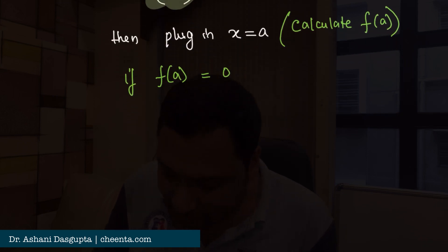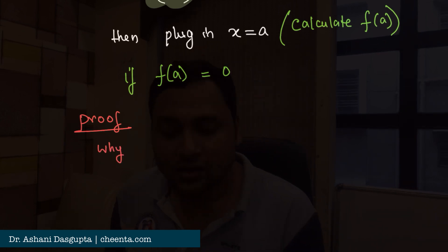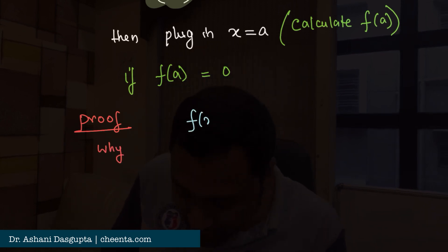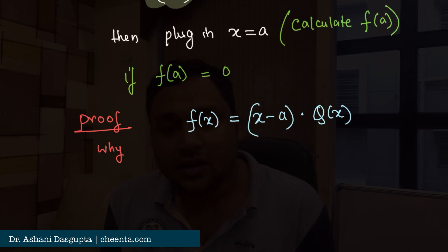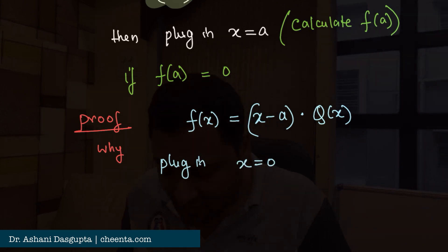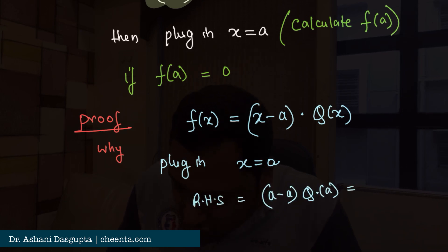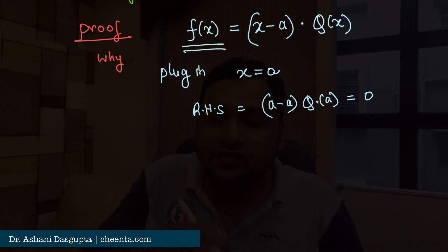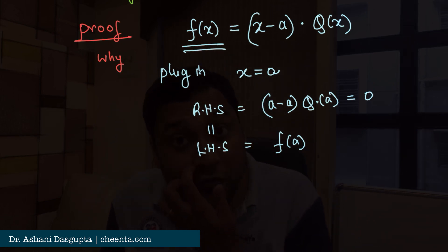If f(a) = 0, then (x − a) divides f(x), and this is an if-and-only-if condition. Here's a quick proof: if f(x) is divisible by (x − a), you can write f(x) = (x − a)·Q(x). Plugging in x = a, the right-hand side becomes 0, and the left-hand side becomes f(a), so f(a) = 0.